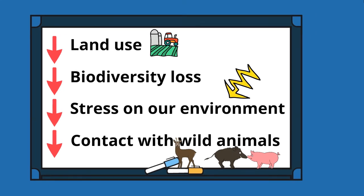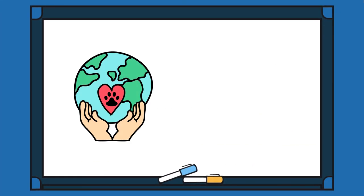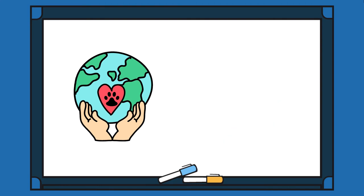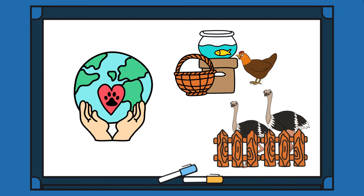Sure enough, we also wish to respect animal welfare, and yet we continue to keep them in confined spaces and under stressful and unhygienic conditions. If we want to prevent emerging zoonotic diseases, we need to start paying attention to the living conditions of animals on farms and wet markets.